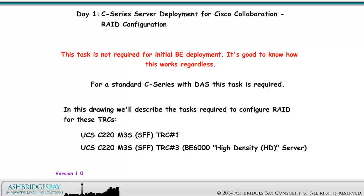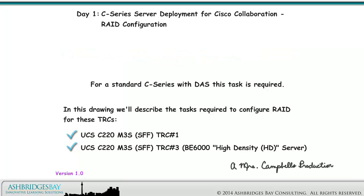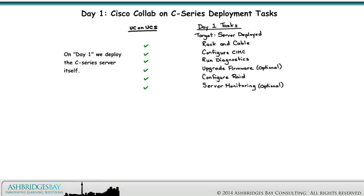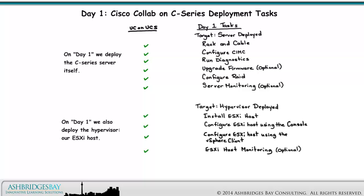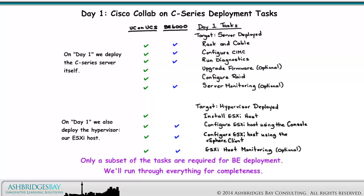In this drawing, we'll describe the tasks required to configure RAID for these TRCs: UCS C220 M3S SFF TRC No. 1 and UCS C220 M3S SFF TRC No. 3, BE6000 High Density Server. On Day 1, we deploy the C-Series Server itself. On Day 1, we also deploy the Hypervisor, our ESXi host. Only a subset of the tasks are required for BE deployment, but we'll run through everything for completeness.